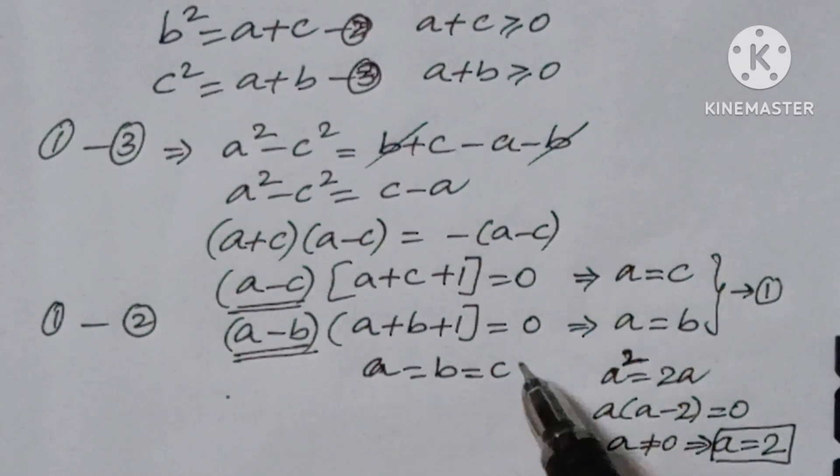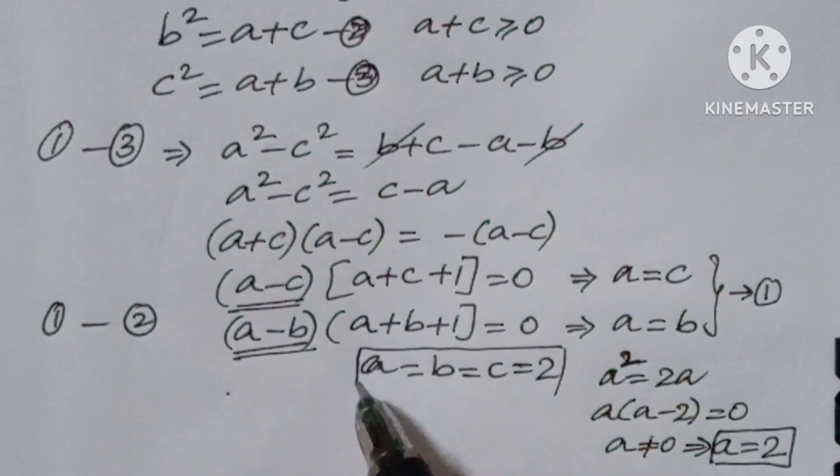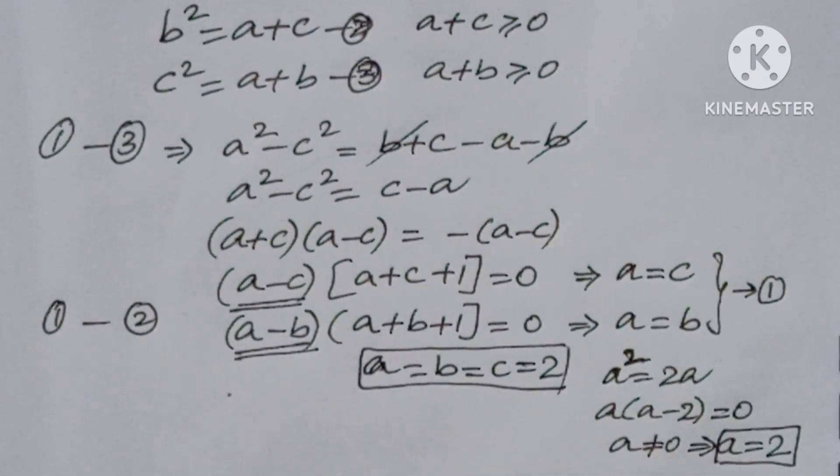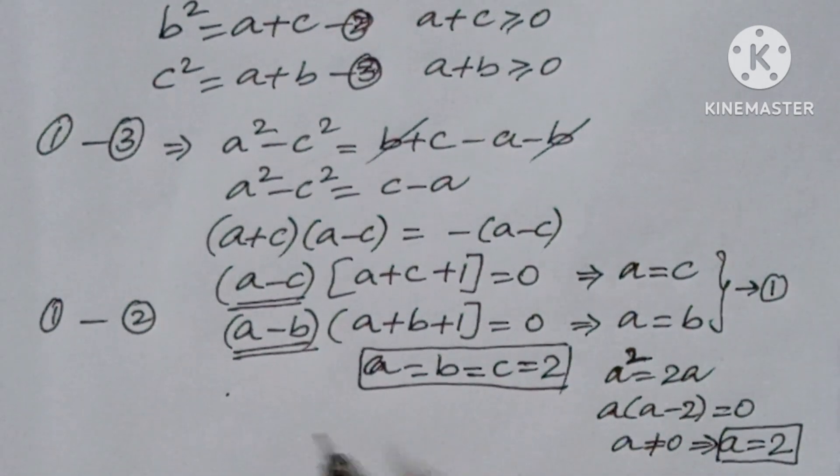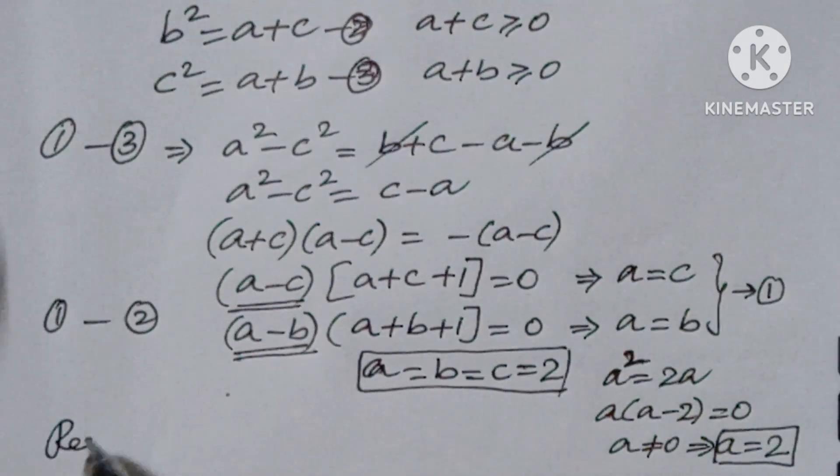Now if a value is 2, all the values a equal to b equal to c is equal to 2. Now what is required here?